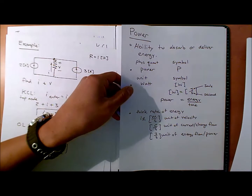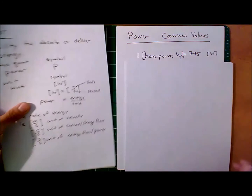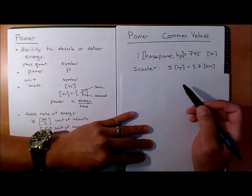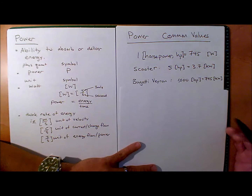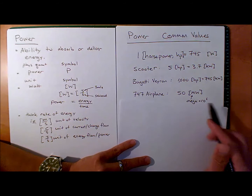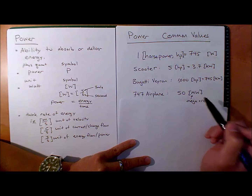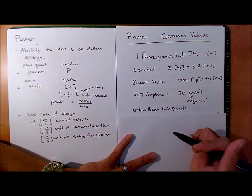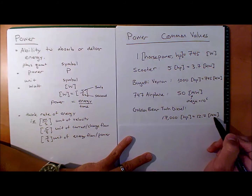Some common values for power: one horsepower is about 745 watts. A simple moped is about 5 horsepower, so 3.7 kilowatts. A Bugatti Veyron claims 1000 horsepower — 745 kilowatts. A 747 airplane puts out 50 megawatts. And the Golden Bear twin diesel engines output 17,000 horsepower or 12.7 megawatts.